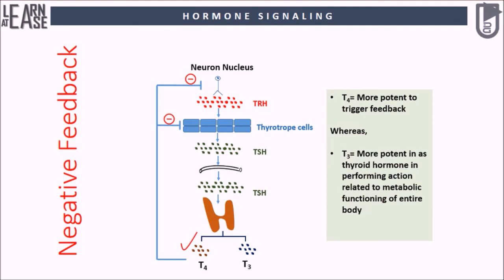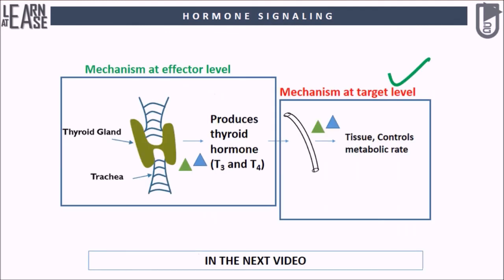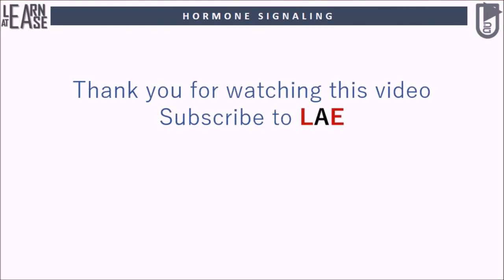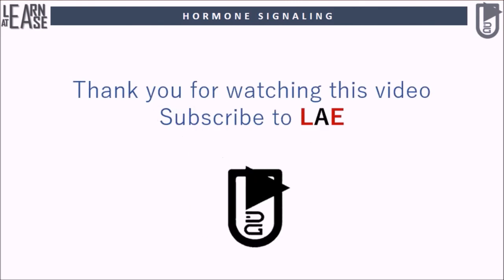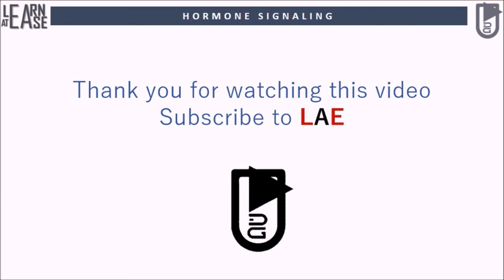After T3 and T4 are produced by the thyroid gland, they travel in the blood bound to thyroid binding protein and reach the target tissue to induce the desired effect. In my next video I will be discussing the mode of action of thyroid hormones at the target level. Thank you for watching. Subscribe to LAE if you like this video, and feel free to share it.